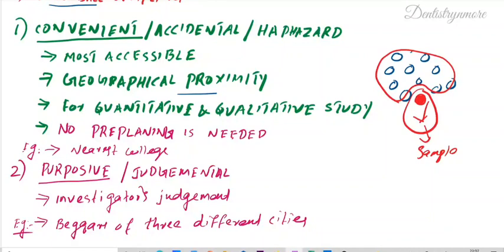For convenient sampling, there is no pre-planning needed — we just go to the place and take samples as per the researcher's convenience. It can be used for both quantitative and qualitative studies.